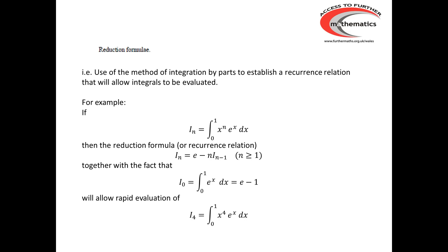For example, if we've got the integral between 0 and 1 of x to the n, e to the x dx, using integration by parts we can establish a formula linking I_n to I_{n-1}. And having got that recurrence relationship, we can then evaluate relatively easily I_4 — the integral between 0 and 1 of x to the 4, e to the x dx.